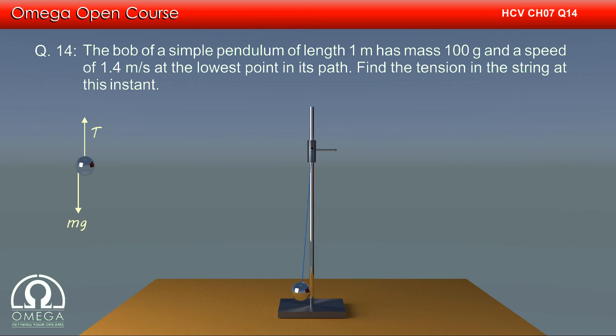Since our frame is moving on a circular path of radius equal to the length of the string, centrifugal force equal to mv square by L is pushing the block downward where V is speed of the bob and L is length of the string.